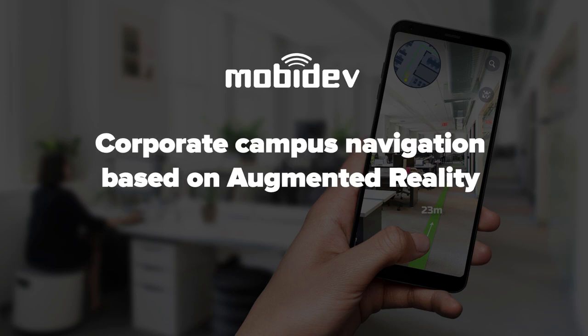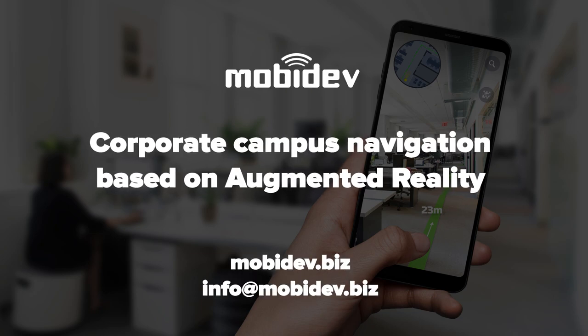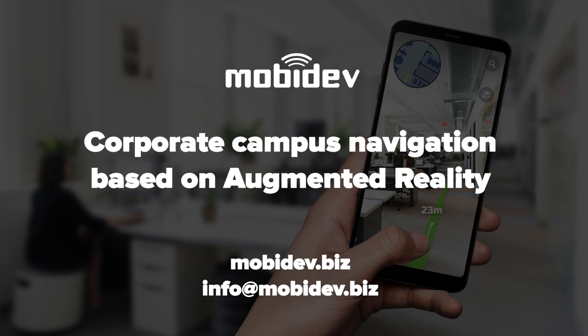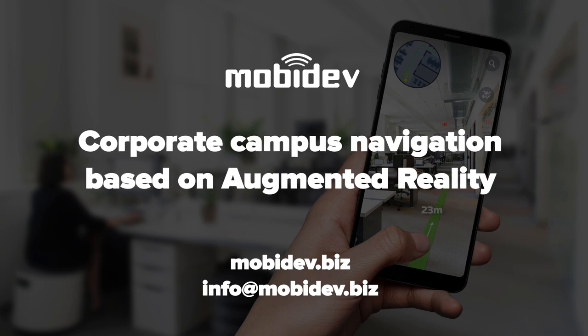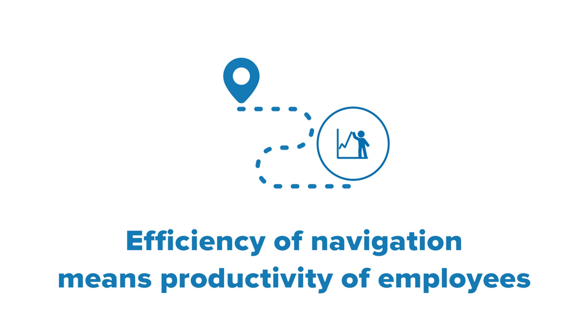This demo shows how mobile augmented reality can be used for navigation on campus, which is vital for modern corporations with large premises, where convenience and efficiency of navigation means increased productivity of employees.